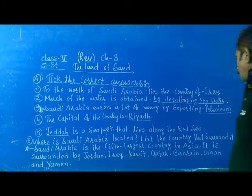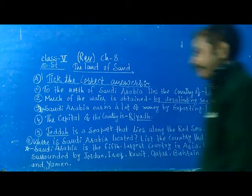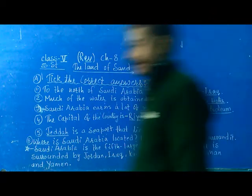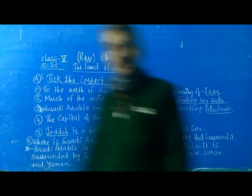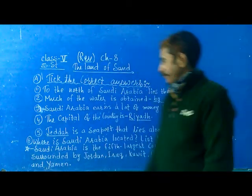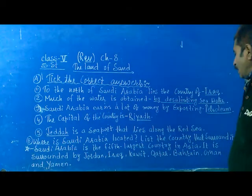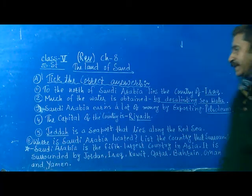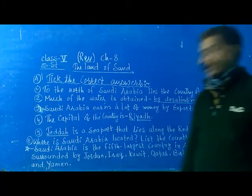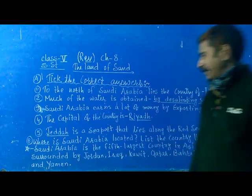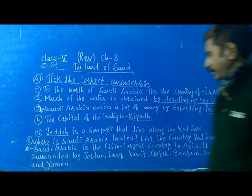This is the country that is Saudi Arabia. Saudi Arabia is the fifth largest country in Asia. It is bordered by Jordan, Yemen, Kuwait,